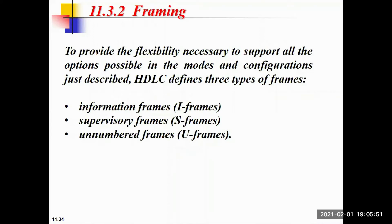Now we will see framing. To provide the flexibility necessary to support all options in mode and configuration, HDLC defines three types of frames. The first is the information frame, or I-frame, which is used for transporting user data and also carries acknowledgement of the receipt of frames. The first bit is zero, which identifies the frame as an I-frame.